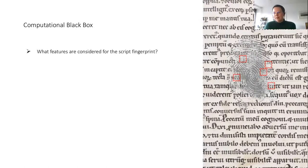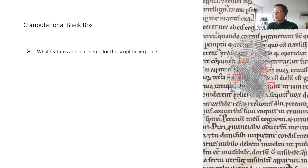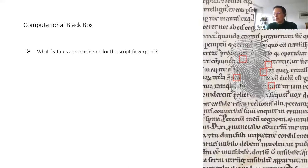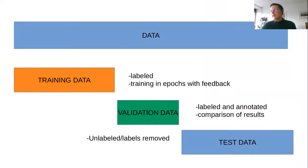Here we also arrive at the well-known computational black box. The disadvantage of using artificial intelligence is that we have no idea which features are considered for the script fingerprint. We can't really visualize yet what the computer is looking at — whether it's specific letters, specific angles, or strokes. It can compare hundreds of features, but we just don't know which ones are distinguishing between two different scripts or deciding whether two images are similar.